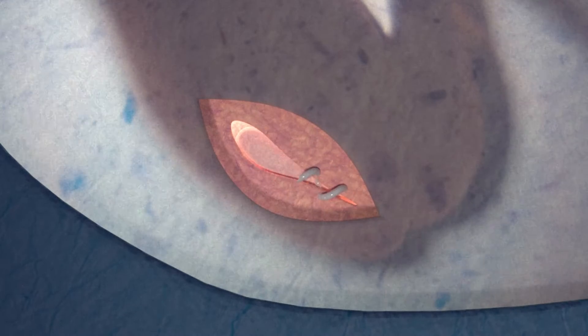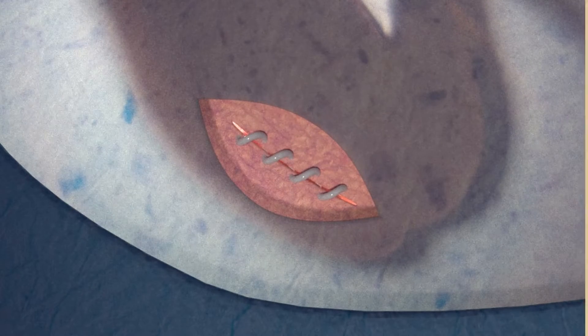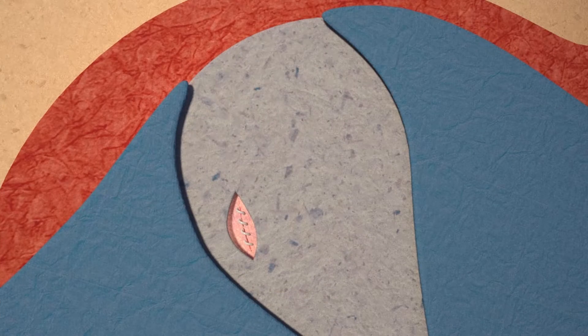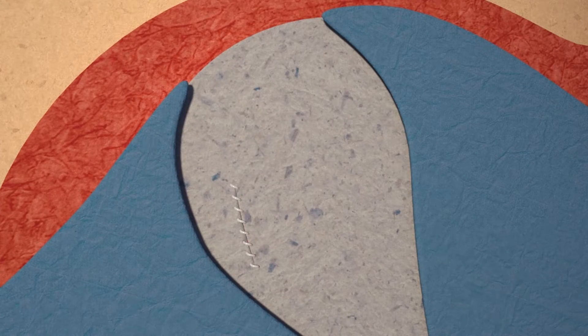We cover up the spinal cord, cover up the skin of the baby, and then replace the baby back into the uterus, replace the fluid that's lost during the operation, and then close up that uterus.